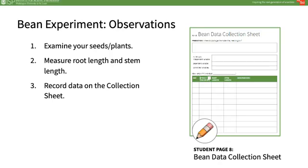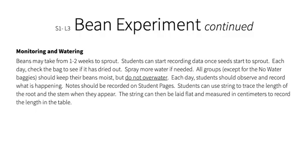Teachers, don't forget: the bean experiment set up during Lesson 1 will still continue. Students will observe bean growth every two days for a couple of weeks from here onward. While the beans are growing, you will continue teaching your MySci lessons. Tell students that to measure root length and stem length, they can use a piece of string to trace the length of the root and then straighten out the string to measure its total length. Be sure to keep an eye on the sprouts to make sure they don't dry out, and add a small amount of water to the bags if they seem dry. Refer to the bean setup directions for more information.